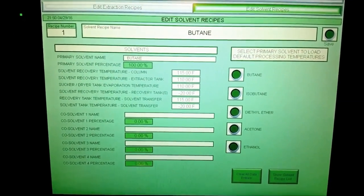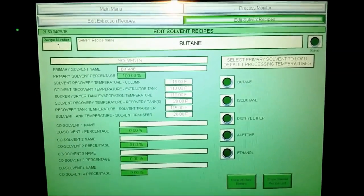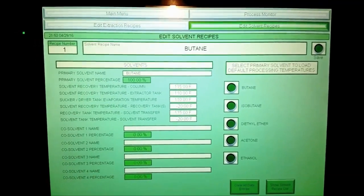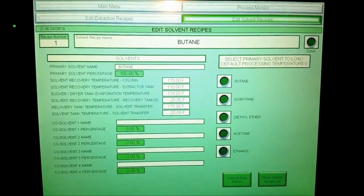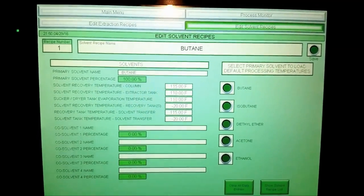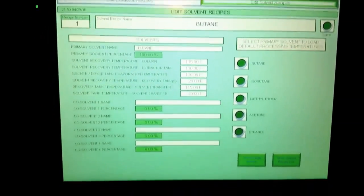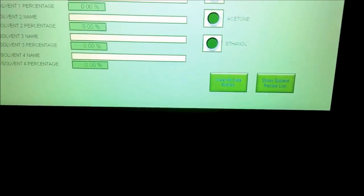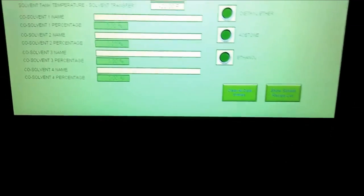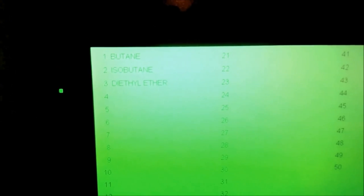This particular extraction we're using butane. You could use isobutane, diethyl ether, dimethyl ether, alcohol, acetone, whatever you need to use. Show your solvent recipe lists. We have three different solvents that we've got programmed in here now.